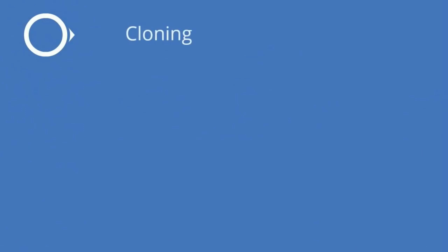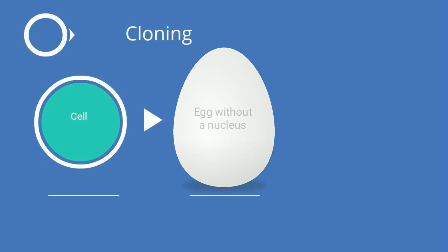Basically, in order to clone another animal, you take a cell from one, then you take an egg without a nucleus, and then you get an offspring. But it's a little bit more involved.